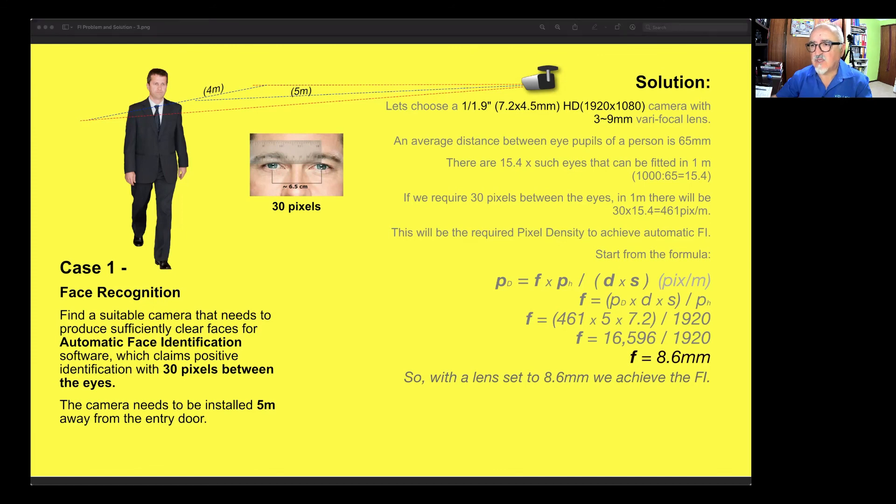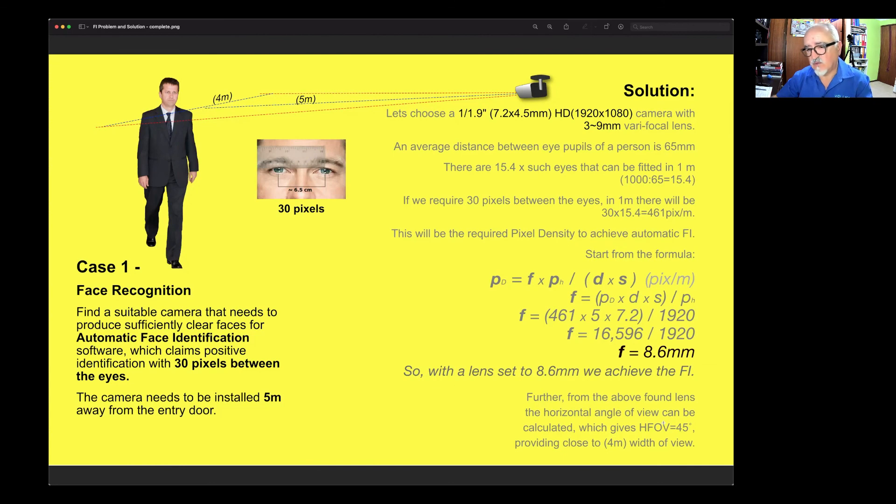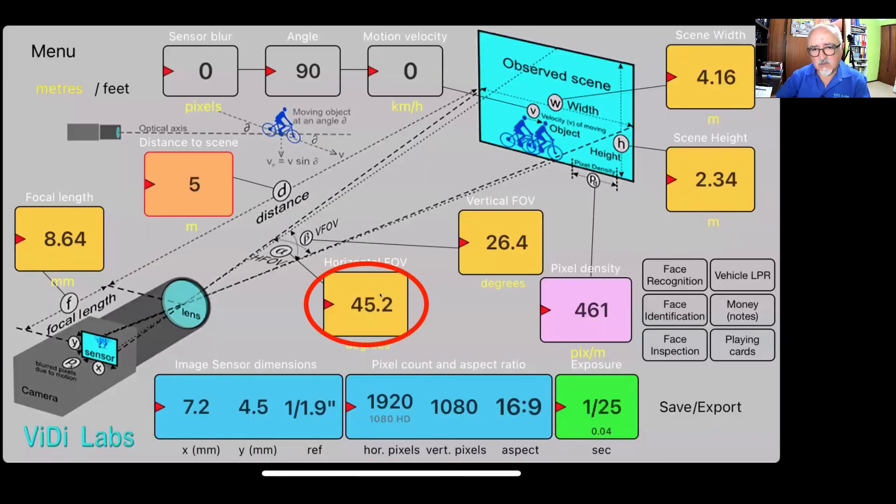From here, you also find what is the horizontal field of view. The calculator calculates it's 45.2 degrees in this case and the scene width is 4.16 like we said before. That practically means at that 5 meters distance required for the identification through the software, 4 meters width means probably even up to 4 people can pass next to each other shoulder to shoulder at the same point. And if the software is capable, it may have 4 people automatically recognizing in real time faces. And that's how you can use Videolabs calculator for one of the simplest methods by entering whatever number you know and changing the others to get either the focal length or maybe pixel density or other way around.